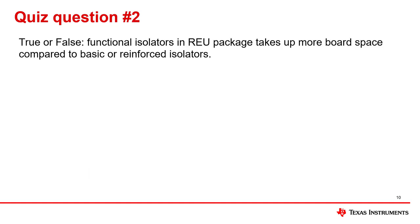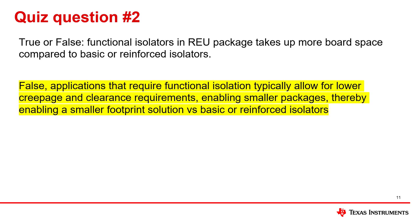Now for the second question. True or false: functional isolators in the RAU package take up more board space than basic or reinforced isolators. The answer is false. Applications that require functional isolation typically allow for lower creepage and clearance requirements, enabling smaller packages and a smaller footprint solution compared to a basic or reinforced isolator.